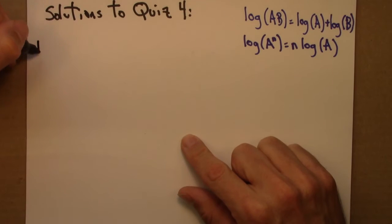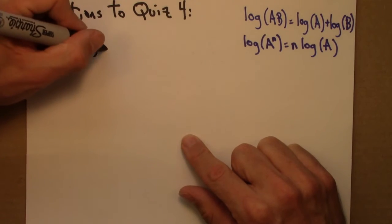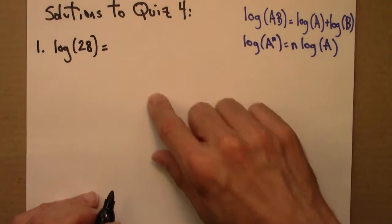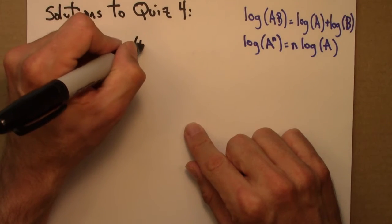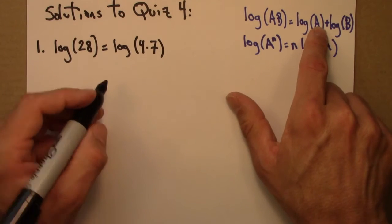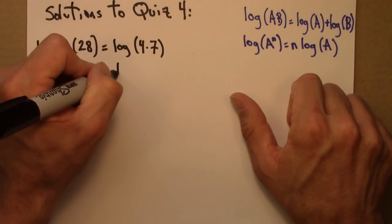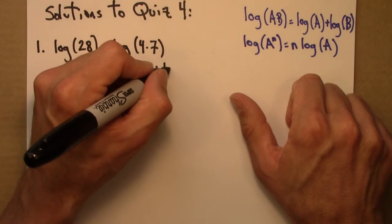So the first question in this quiz asked about log of 28. Well, 28 is 4 times 7, and then by this property I can write this as log 4 plus log 7.